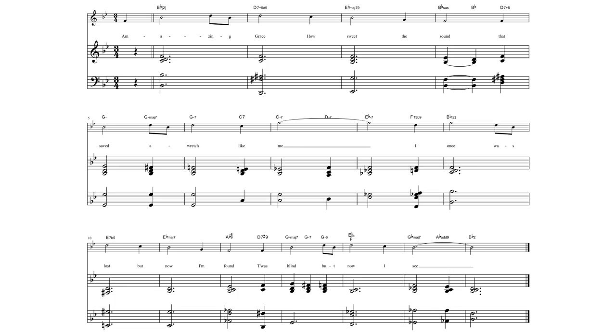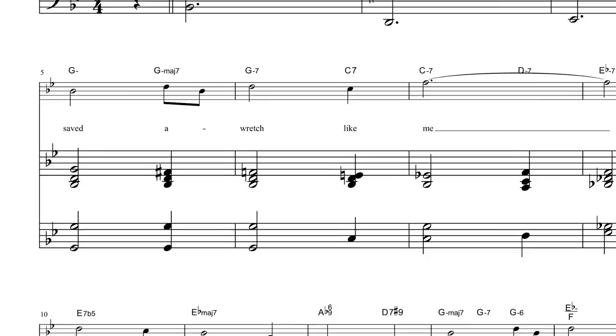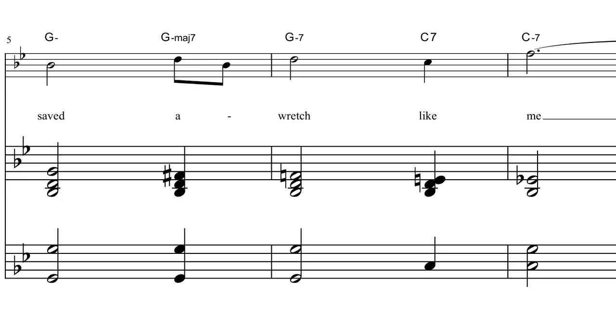There are two other smaller but important harmonic changes to highlight in this version 5 of Amazing Grace. One is in bar 5. More harmonic movement and colour has been produced by adding in a G minor major 7 chord between the G minor and the C7. This again is a common jazz device. It has to be used with taste as it does not always fit the style and of course it has to work with the melody.